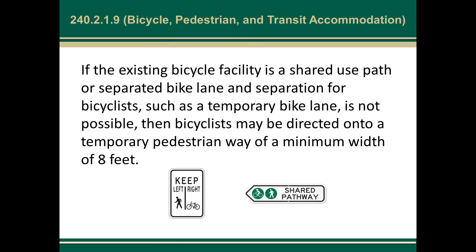If the existing bicycle facility is a shared use path or separated bike lane and separation for bicyclists such as a temporary bike lane is not possible, then bicyclists may be directed onto the temporary pedestrian way with a minimum width of eight feet. This is different from what we had in the past — previously we specified not to put bicyclists onto a pedestrian facility, but as we move toward more separated bicycle facilities, we're seeing that this might be the most appropriate thing in certain circumstances.